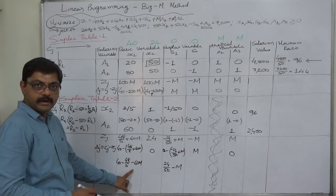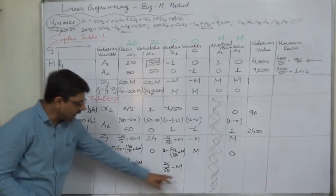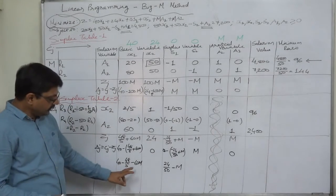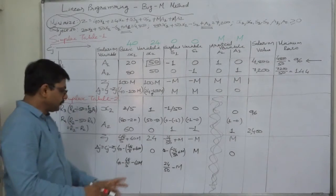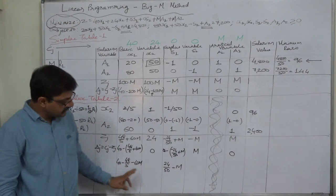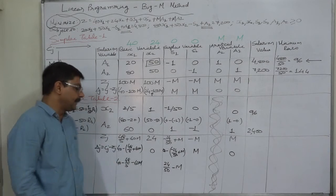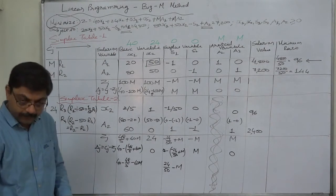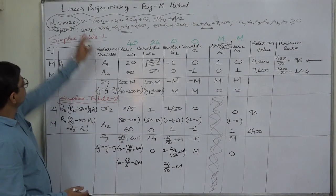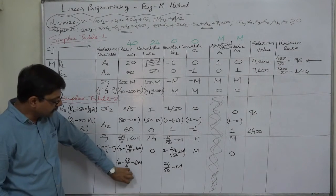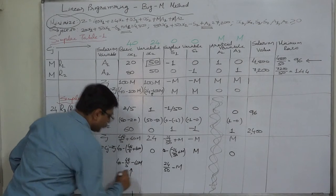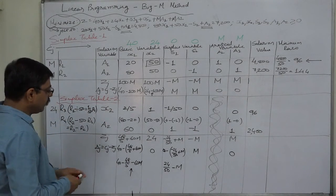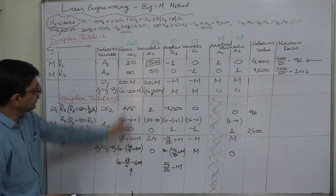So we can say that this is the smaller one, and both are negative because M is as large as infinity or the largest possible value in the simplex table. So minus 60M is far less than minus M. Ignore all other factors because they are very small against M. And since this is a case of minimization, we have to select the smallest delta j value. So we are selecting this value. Now we have already selected x1 as our key column.